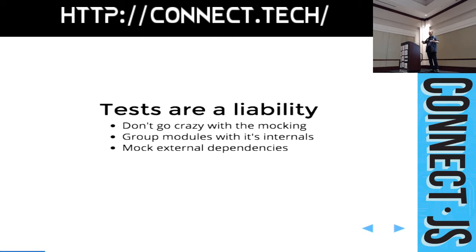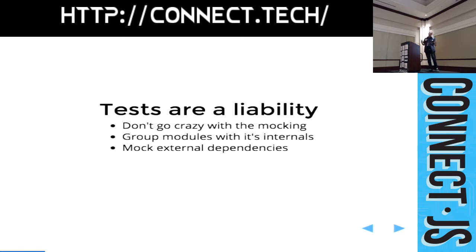When you're thinking about mocking and your modules, try to draw the seams at a reasonable level of abstraction. If you think of your modules as a tree, don't test every leaf node on its own — don't mock everything around each individual node. Try to find a reasonable subtree and say all these modules beyond this point are a package, and test this package as a single unit. Always mock external dependencies — if you depend on a database or file system, you end up with flaky tests. Group modules with their internals.